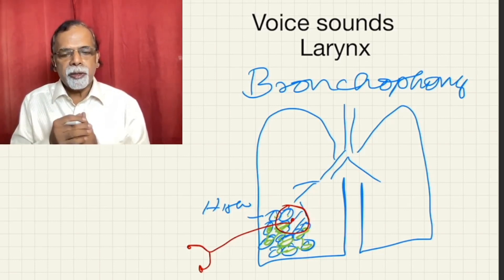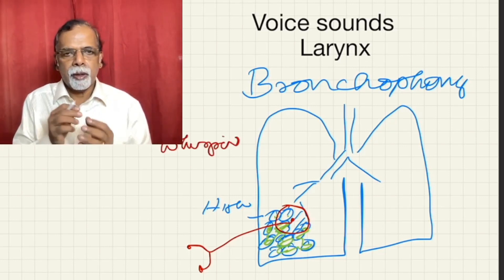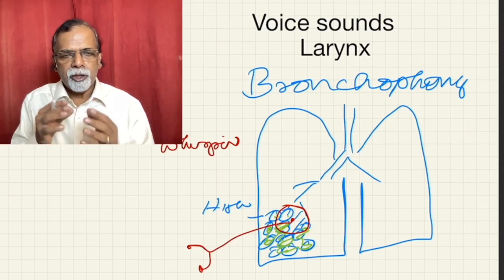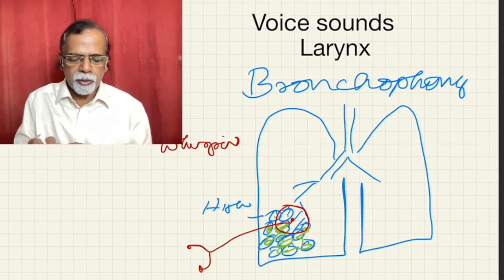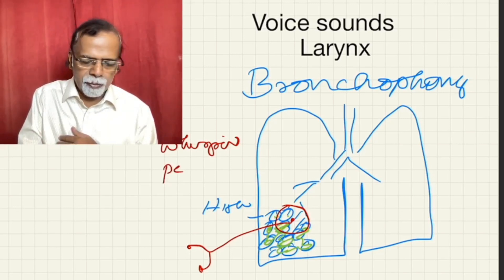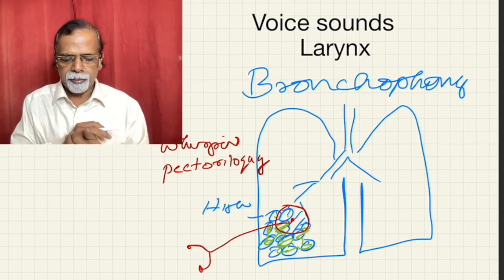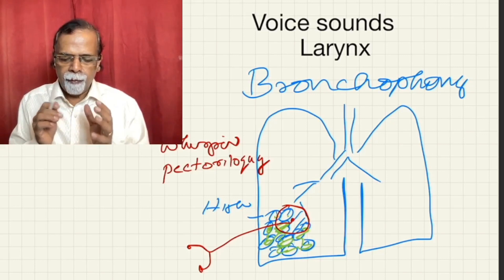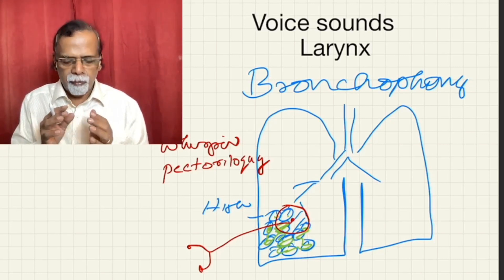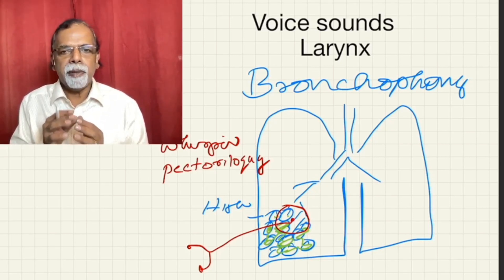When there is bronchophony, you ask the patient to whisper something — that is, without producing voice, you whisper. If it is clearly heard, it is called whispering pectoriloquy. The fundamental thing is the airway should be patent and the lung should be consolidated.